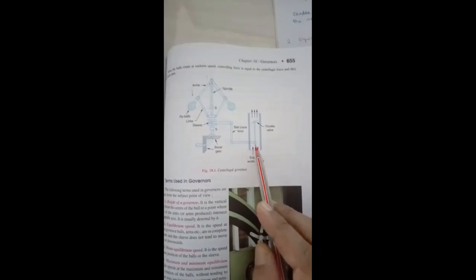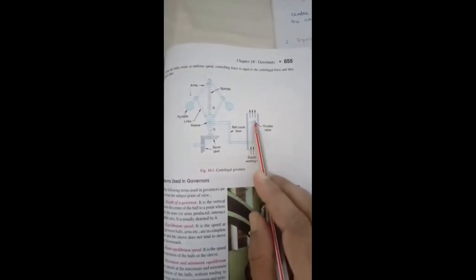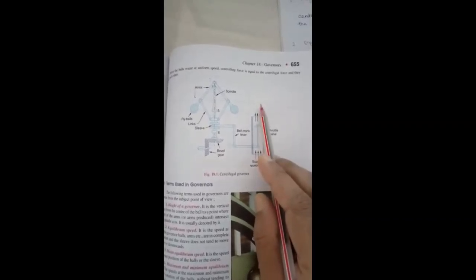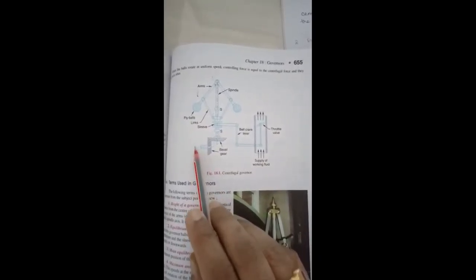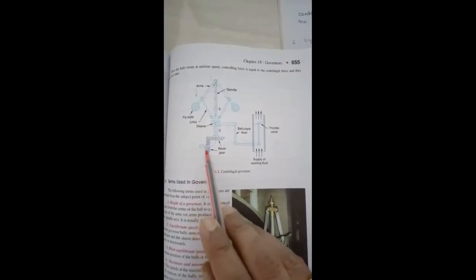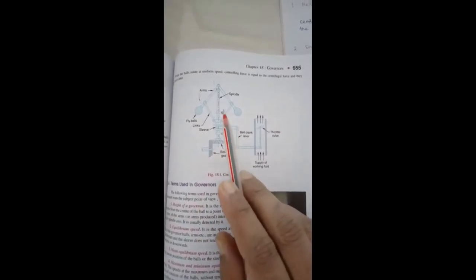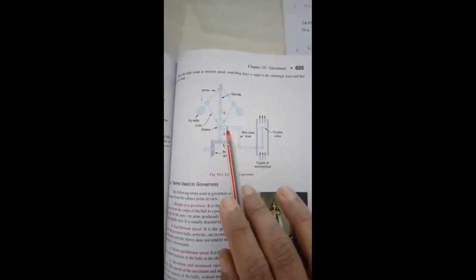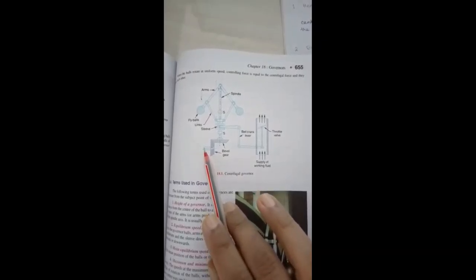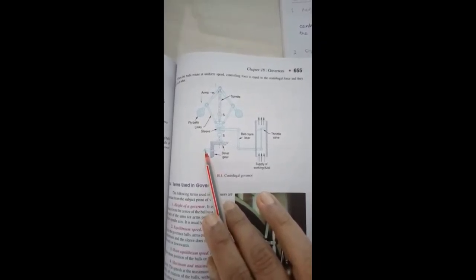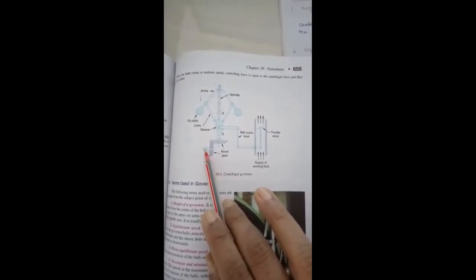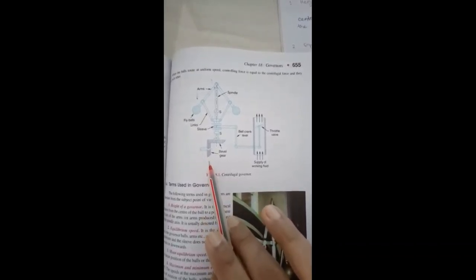If this sleeve falls down, according to the movement of this bell crank lever, the fuel supply will increase. If the fuel supply increases, then the speed of the engine will increase. In a very few seconds, equilibrium is reached. That means it will maintain the same speed, 100 rpm, at more load condition.